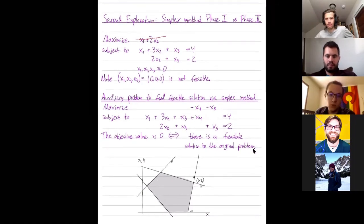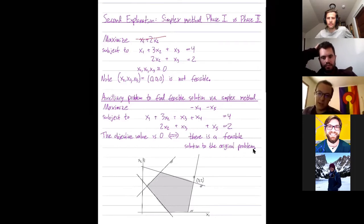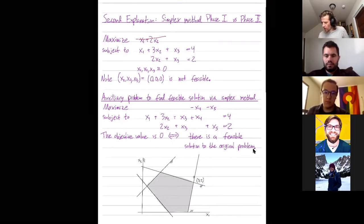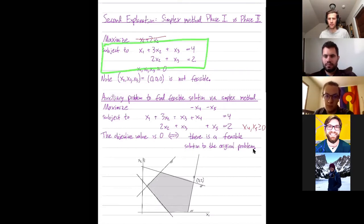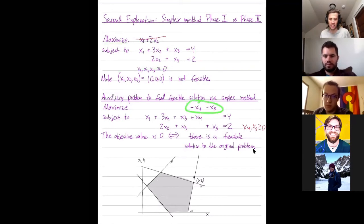Student question: Did you say that both x4 and x5 need to be zero, or just their sum? Both of them need to be zero. I should add here that x4 and x5 are both non-negative, so you need both of them to be zero in order to have a basic feasible solution to this problem. And if the maximum is obtained at, say, negative 17, that tells you it's impossible for both x4 and x5 to be zero, which is the same as saying it's impossible for these constraints to be satisfied.